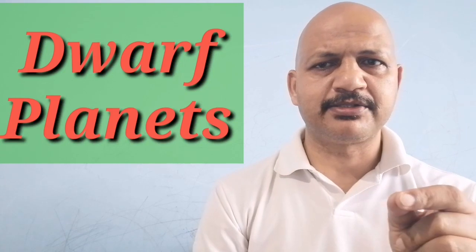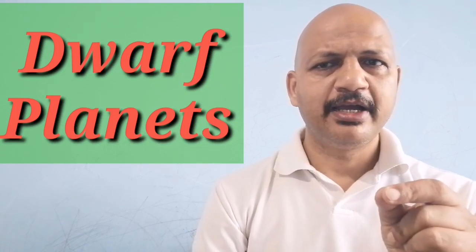Till August 2006, there were 9 planets in our solar system. The ninth planet was Pluto. But in a meeting of the International Astronomical Union, it was decided that newly discovered celestial bodies along with Pluto may now be called dwarf planets.